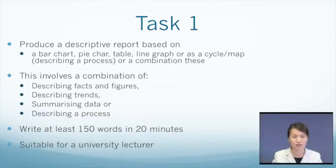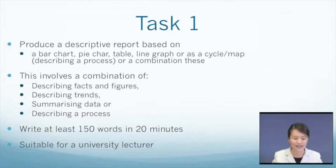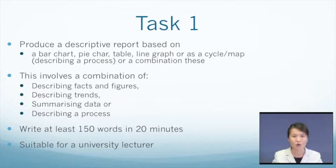The IELTS writing paper consists of two major tasks which the candidate has to finish within 60 minutes. Task one is a short report. You have to write a descriptive report based on a bar chart, a pie chart, a line graph, a table, a process diagram or a combination of these. In other words, you have to describe facts, figures, trends and summarize data or describe a process. The word limit for this task is 150 and you have only 20 minutes to finish the task. You should assume that your work will be read by a university lecturer and therefore only formal language should be used. ICQ style language, contracted forms and informal language should not be used in your work.